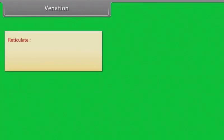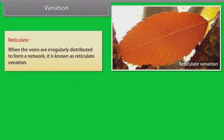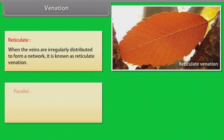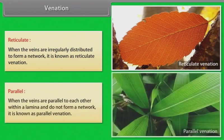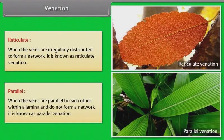Reticulate venation: when the veins are irregularly distributed to form a network, it is known as reticulate venation. Parallel venation: when the veins are parallel to each other within a lamina and do not form a network, it is known as parallel venation.